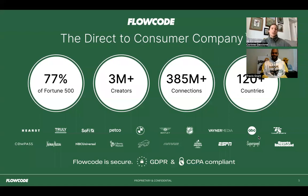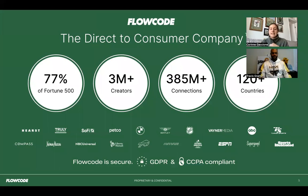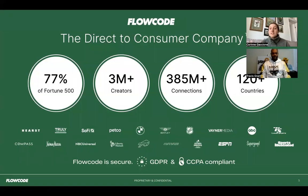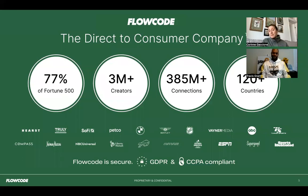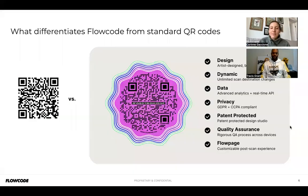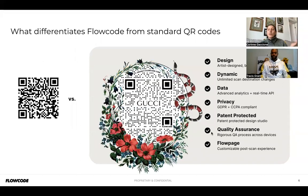FlowCode is a direct-to-consumer company looking to connect brands with their customers, especially in such a digital-centric world. You might have heard the term 'offline to online,' which is what we specialize in — bridging the gap between real-life experiences and the digital. This slide shows all the partnerships we've had, demonstrating that we know what we're doing and we're here to help you become successful.